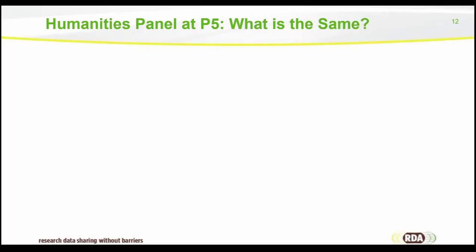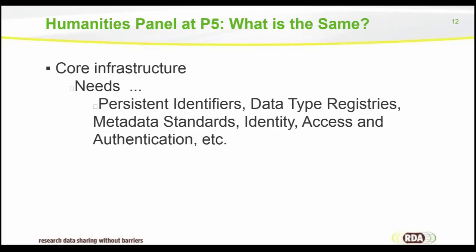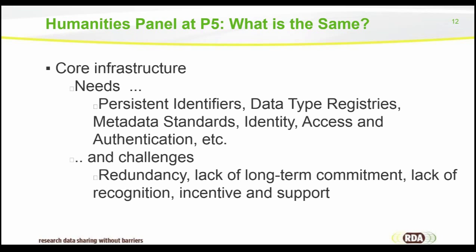The key takeaways from the panel addressed what is the same across digital humanities and other disciplines. The key point of agreement was that core infrastructure really is the same — both in terms of needs: persistent identifier solutions, data type registries, metadata standards, identity access and authentication solutions, etc. At its core, these needs are not really different across the humanities and other disciplines. Additionally, the challenges around core infrastructure are often the same: a lot of redundancy, similar solutions for the same problem, lack of long-term commitment to sustaining solutions, lack of recognition for work on supporting data sharing and interoperability, and lack of incentives and support.